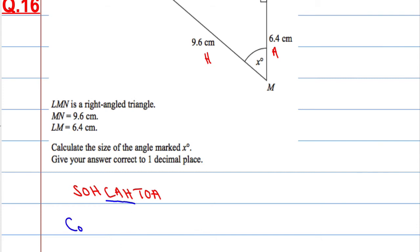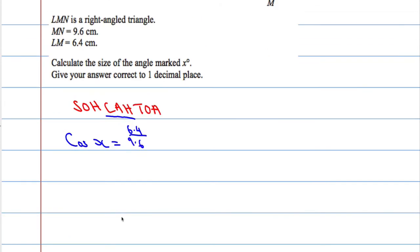In other words, the cosine of the angle x will equal the adjacent 6.4 over hypotenuse, which is 9.6. So cosine of x is 6.4 over 9.6.